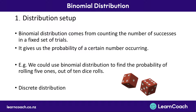Another thing about binomial distributions is they're discrete. We remember from our basic probability concepts that when a variable is discrete, it means that it can only take on whole number values. So the number of successes that occur in a binomial distribution have to be whole numbers.